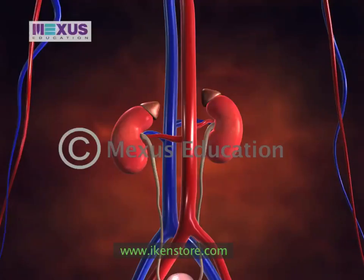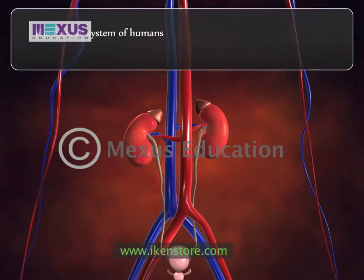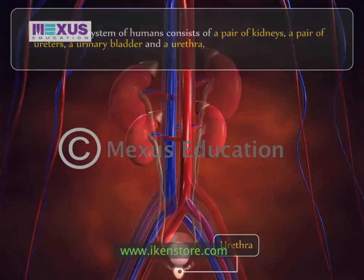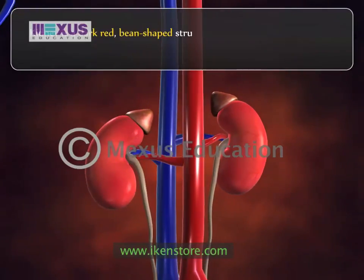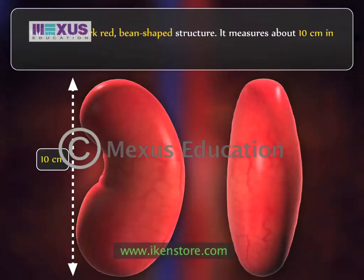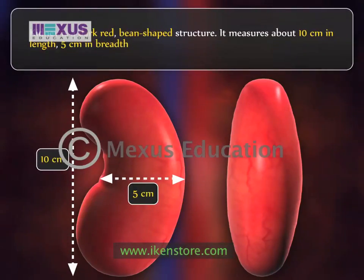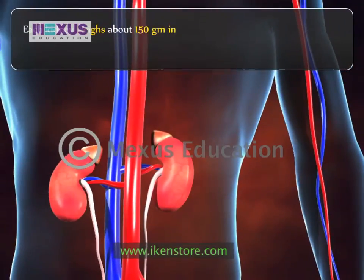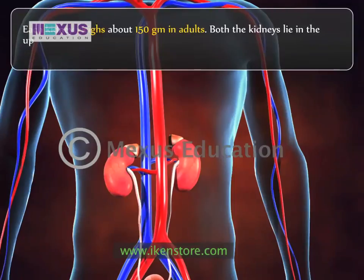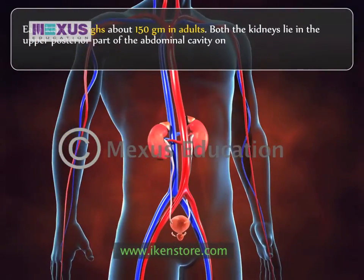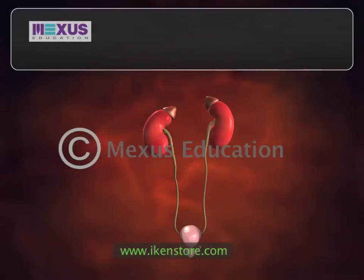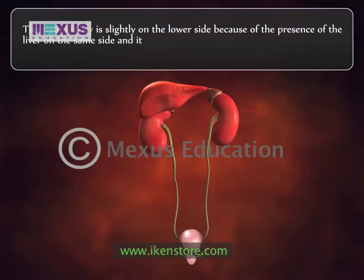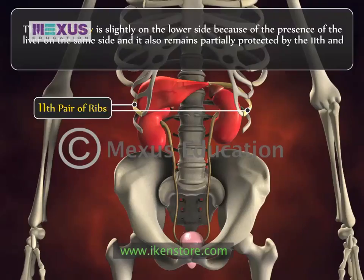The urinary system of humans consists of a pair of kidneys, a pair of ureters, a urinary bladder, and a urethra. The kidney is a dark red, bean-shaped structure measuring about 10 centimeters in length, 5 centimeters in breadth, and 9 centimeters in thickness. Each kidney weighs about 150 grams in adults. Both kidneys lie in the upper posterior part of the abdominal cavity on either side of the vertebral column. The right kidney is slightly lower due to the presence of the liver, and is partially protected by the 11th and 12th pairs of ribs.